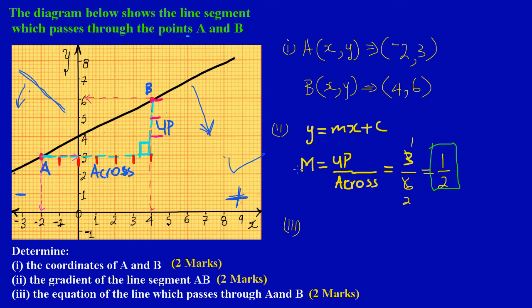Earlier we had looked at the general equation of a straight line: y equals mx plus c, where m is the gradient. The gradient tells us the slope of the line, how steep the line is.